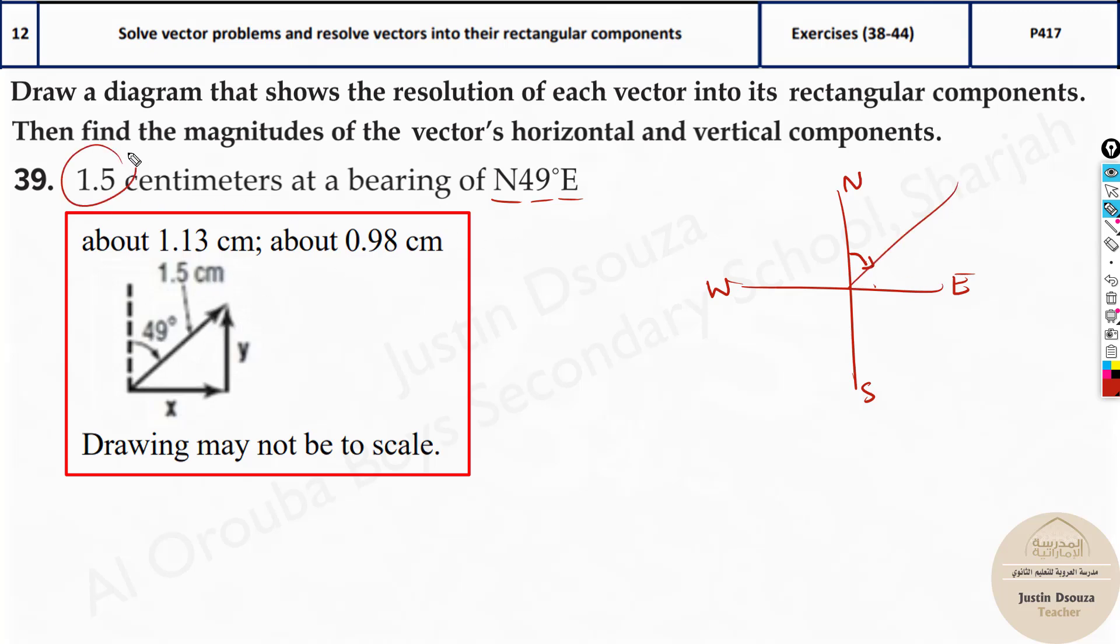And then we know the magnitude over here is 1.5. Now we can easily find the vertical and the horizontal component. Here when you do it in the calculator, both will be positive itself. Why? Because it is in the right and up, both are plus and plus. That is how we can do this.